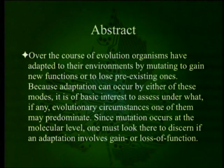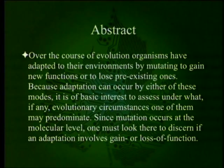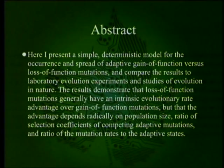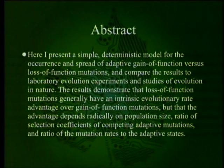The abstract states: over the course of evolution, organisms have adapted to their environments by mutating to gain new functions or lose pre-existing ones. Because adaptation can occur by either of these modes, it is of basic interest to assess under what evolutionary circumstances one of them may predominate — loss of function or gain of function. Here a simple deterministic model is presented for the occurrence and spread of adaptive gain of function versus loss of function mutations, compared to laboratory evolution experiments and studies of evolution in nature. The results demonstrate that loss of function mutations generally have an intrinsic evolutionary rate advantage, but that the advantage depends radically upon population size, ratio of selection coefficients of competing adaptive mutations, and ratio of mutation rates to the adaptive states.